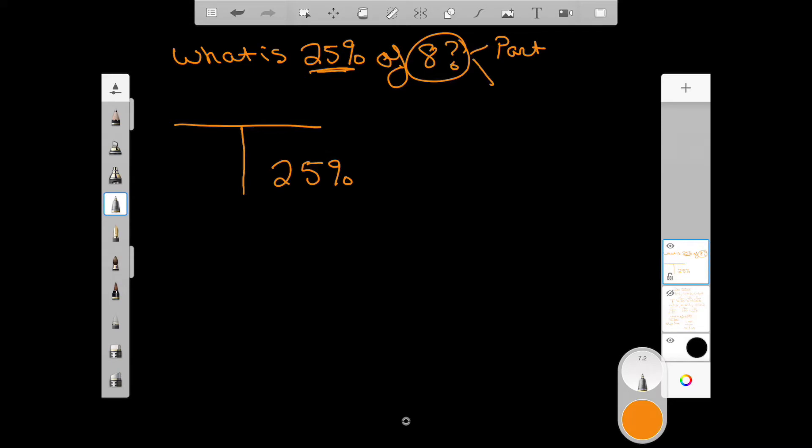In this case once again we have this of here and usually the of is going to go there. So we're trying to find a portion of eight, we're going to stick the eight down here, we're going to multiply. So eight times 25 percent and of course I know you already know the answer is two.